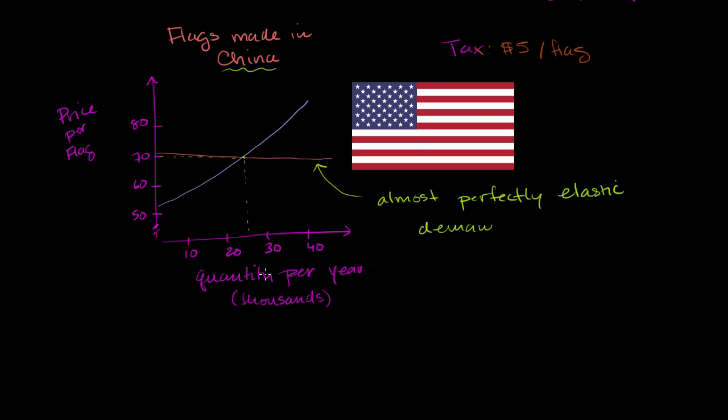So now what is the supply plus tax curve? So the supplier, just to make the flags in China and ship them to the United States and get them to the store here, even to get that first flag done, even if it's done in the most efficient way possible, they need at least, looks like around $52, $53. Now they're still going to need that, plus there's going to be a $5 tax on it. So the supply plus tax is going to be that plus $5.